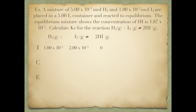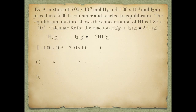Now I'm going to write how those concentrations change. In order for this reaction to reach equilibrium, I must lose hydrogen gas and iodine and gain hydroiodic acid. We calculate those changes based on stoichiometry. I'm going to label the change as x, so hydrogen gas is going to lose x and iodine is going to lose x as well.